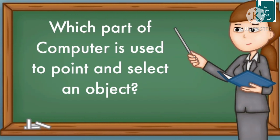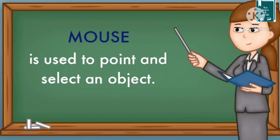Which part of computer is used to point and select an object? Tell me. Mouse. Mouse is used to point and select an object.